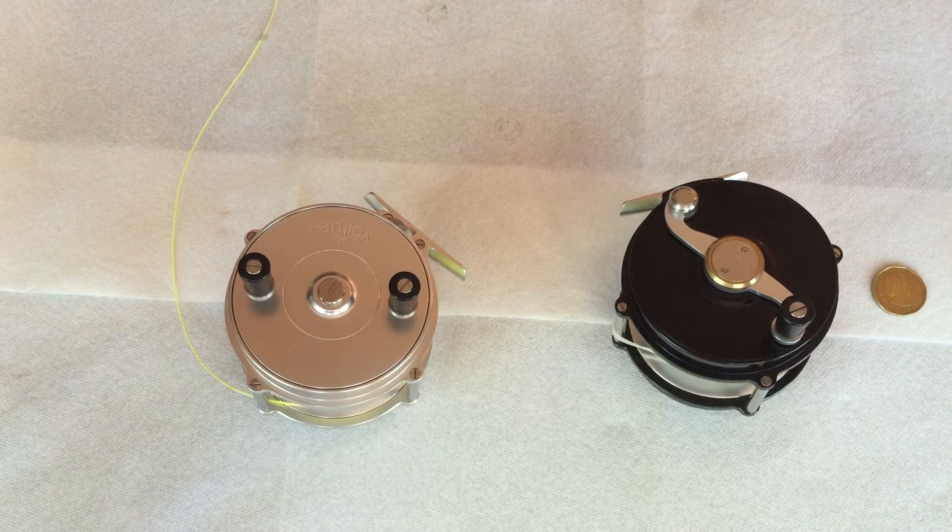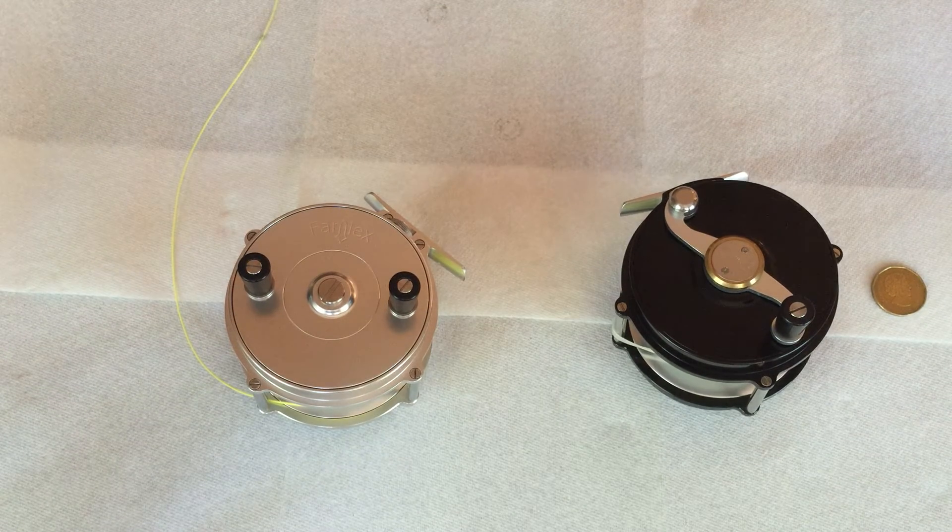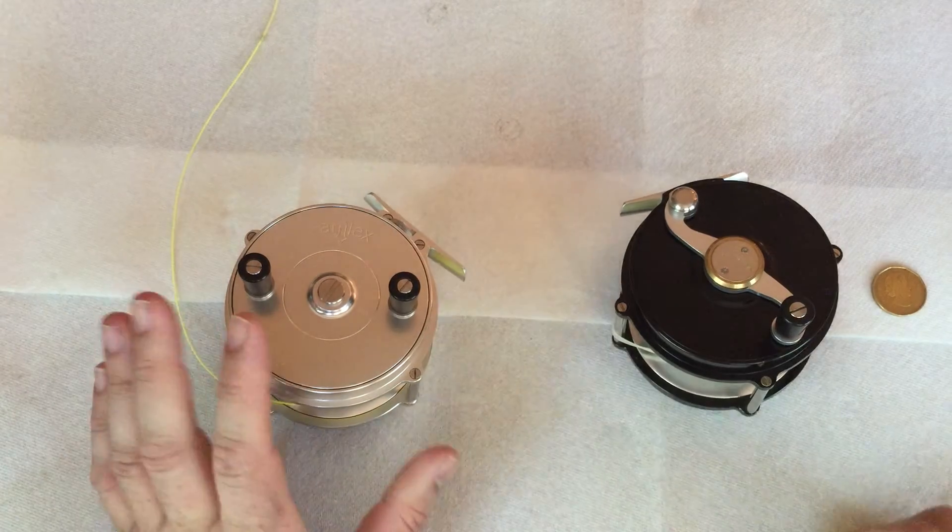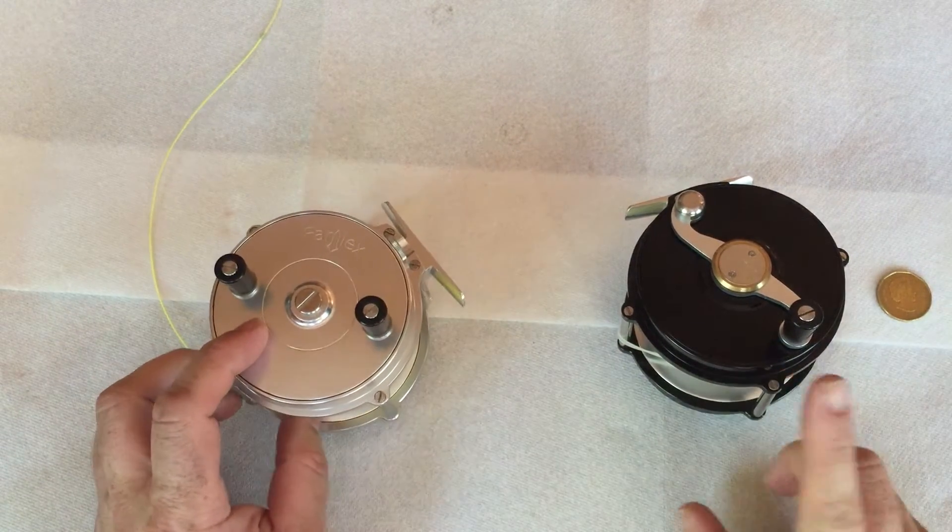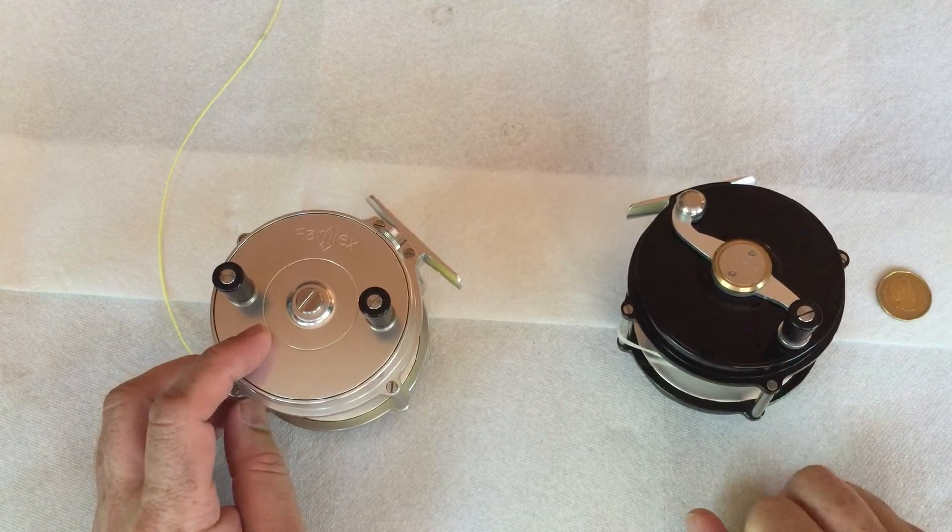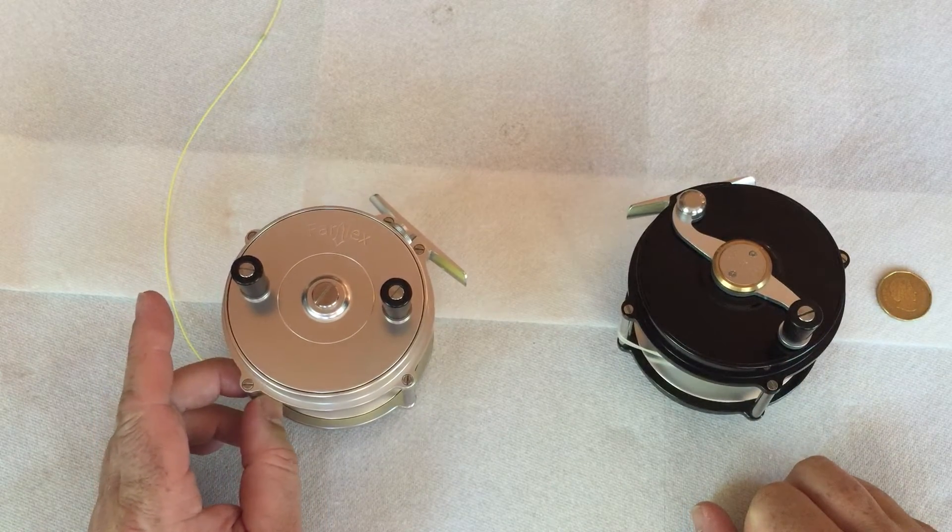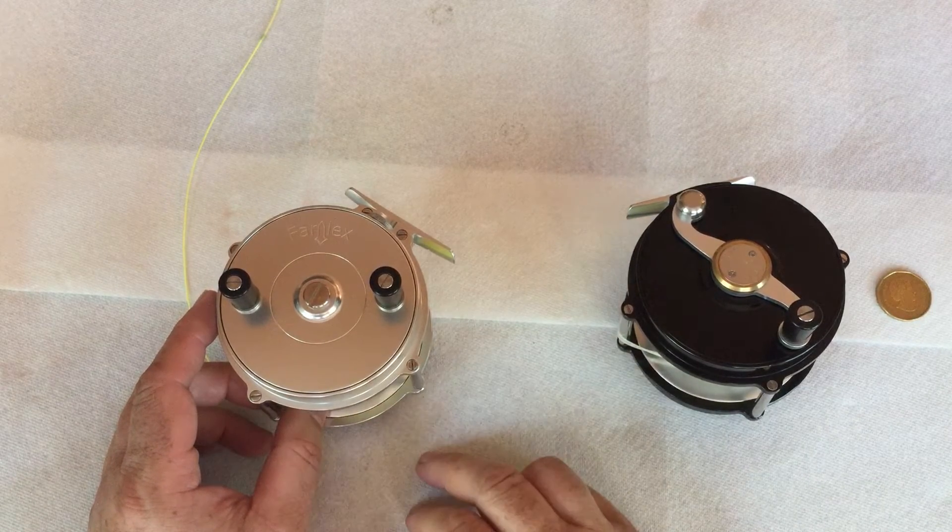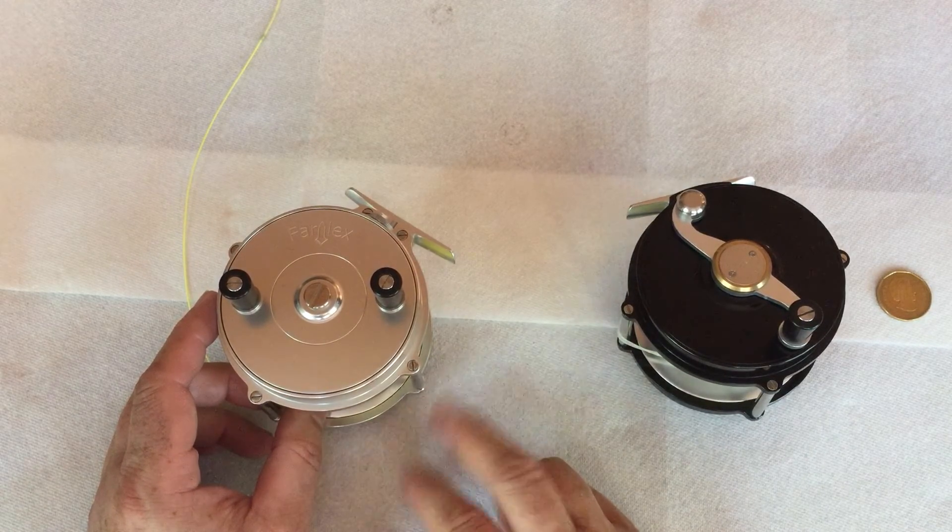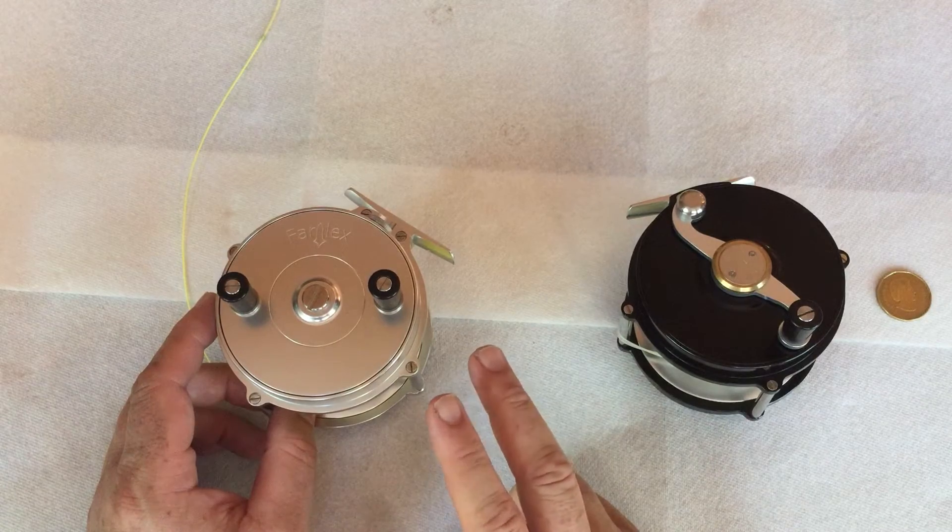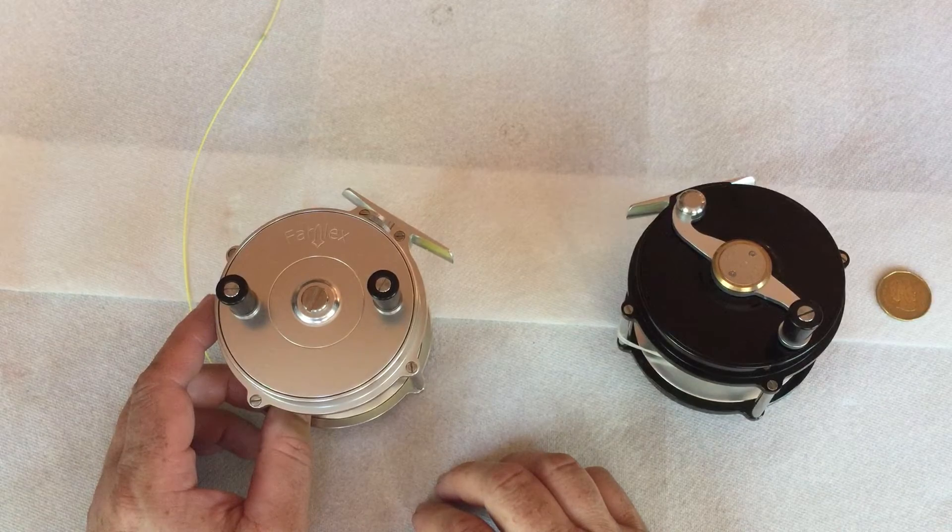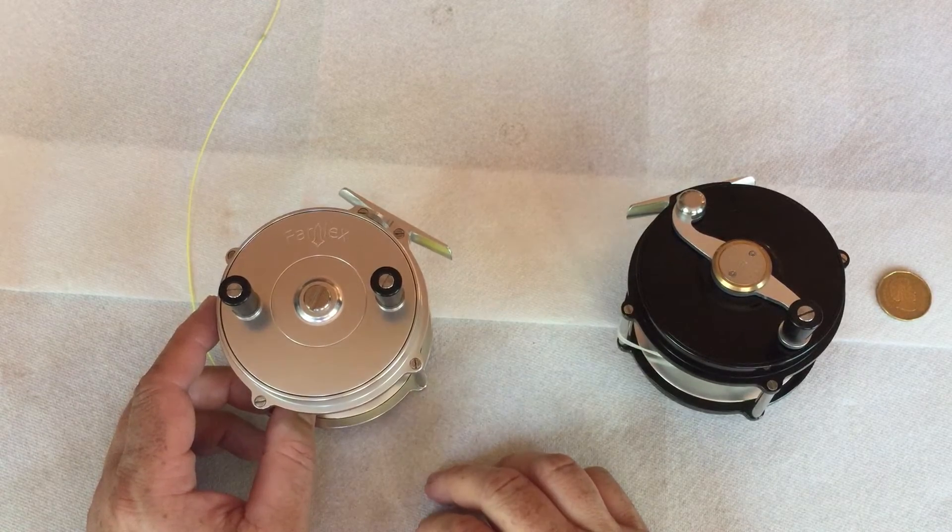This video is for reel lubrication and maintenance of the four inch raised pillar, whether plate wind or S handle. To lubricate this reel, it only needs to have the check gear and gears lubricated. It has sealed bearings, so the maintenance is fairly low.